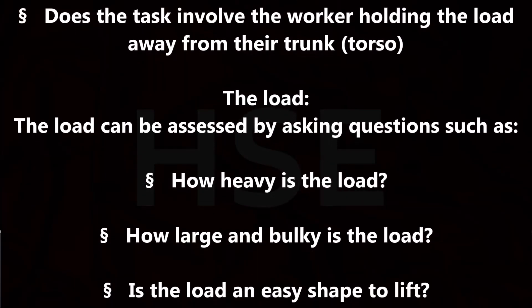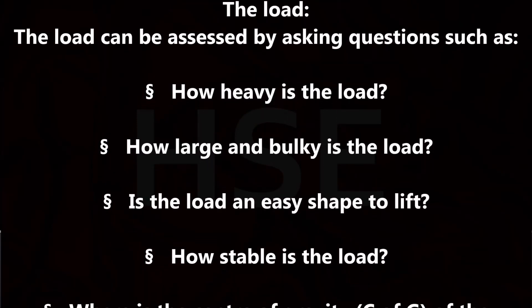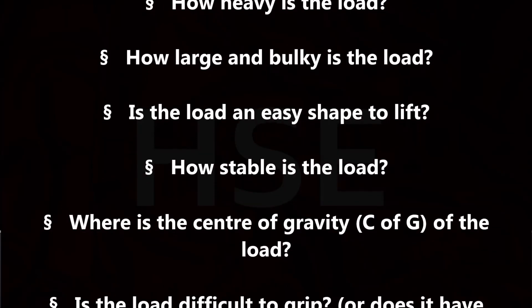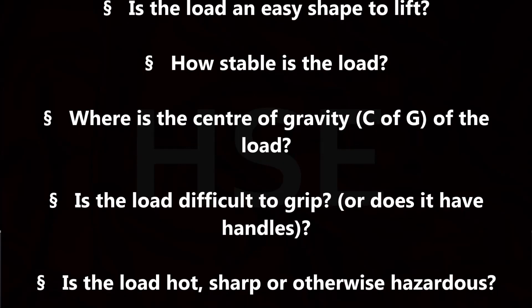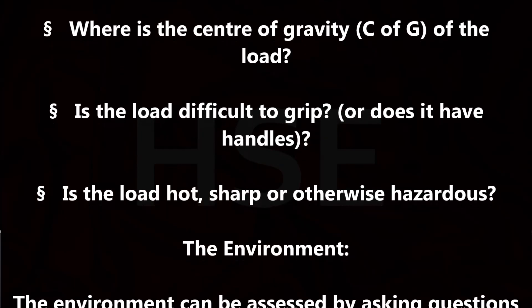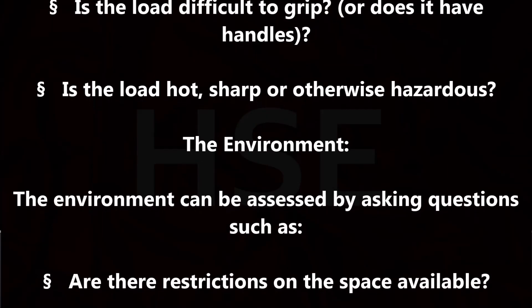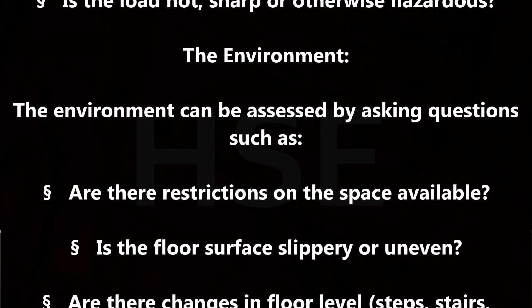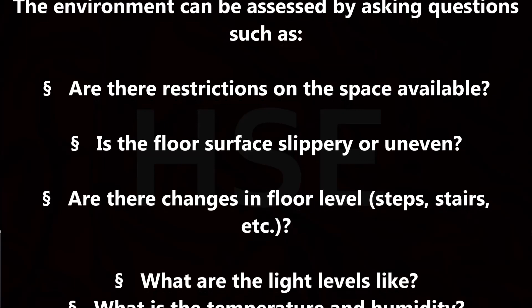The environment can be assessed by asking questions such as: are there restrictions on the space available? Is the floor surface slippery or uneven? Are there changes in floor level — steps, stairs, etc.? What are the light levels like? What is the temperature and humidity? Individual capabilities can be assessed by asking questions such as: does the activity require unusual ability? Some handling activities require unusual strength, stamina, size or technique. Does the activity present significant risk to vulnerable individuals such as pregnant women or people with pre-existing back injuries?